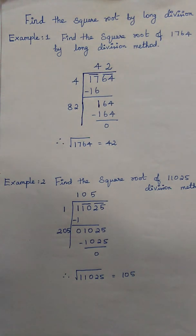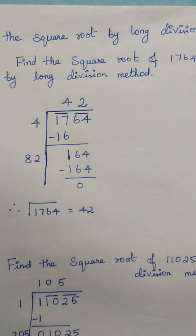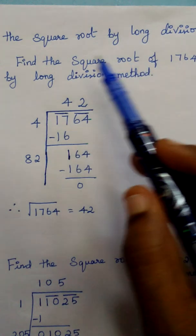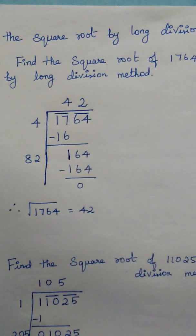Let us look into the method with a couple of examples. Find the square root of 1764 by long division method. Children, listen carefully.